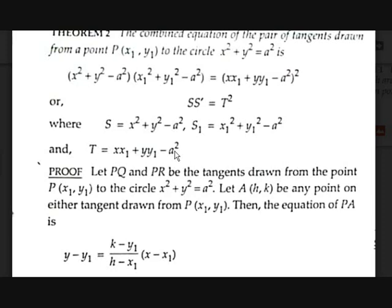Proof: how can we prove this formula? Let PQ and PR be the tangents drawn from point P(x₁, y₁) to the circle x² + y² = a². Let A(h, k) be any point on either tangent drawn from P(x₁, y₁).